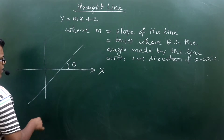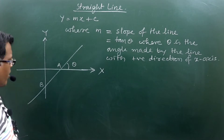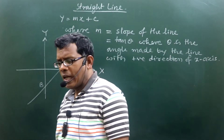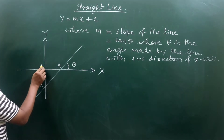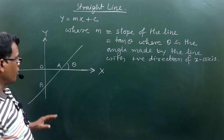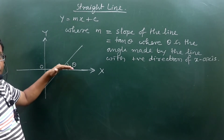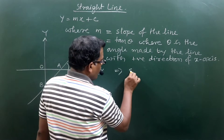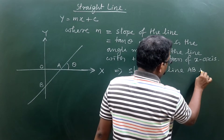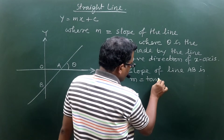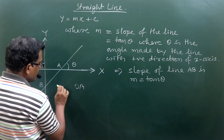The line makes angle theta with the positive direction of the x-axis. We can see it cuts the x and y axes at A and B respectively. The line can be identified using A and B, where O is the origin. The slope of line AB is m = tan theta.